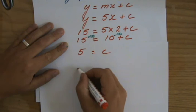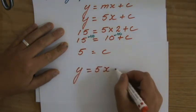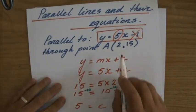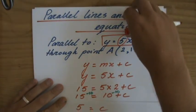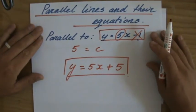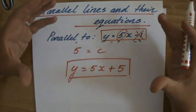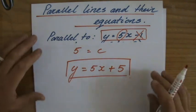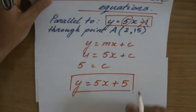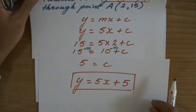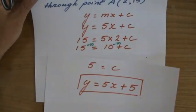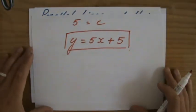I found my y-intercept, which makes the equation y equals 5x plus 5 — the equation of the line I was looking for, which is parallel to y equals 5x minus 1. You can see they're parallel because they have the exact same gradient. So parallel lines have the same gradient, and that's why it's really useful to write these equations in gradient-intercept form. I find the y-intercept by substituting the point they give me into my equation to find c.